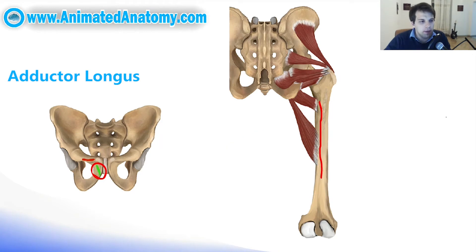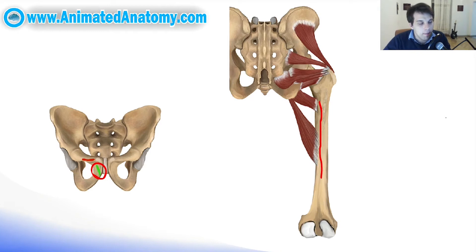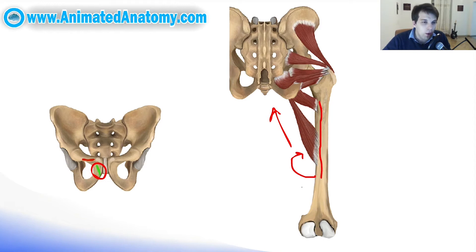What's interesting about this muscle is that in many textbooks you're going to find that it performs medial rotation. Now, obviously when you look at it from this perspective, if this muscle contracts it's going to make the femur rotate this way. However, it actually does perform medial rotation, but only when the hip is flexed.